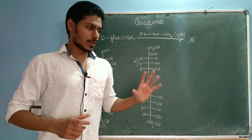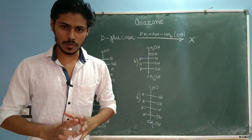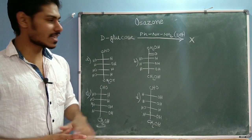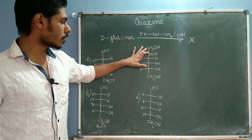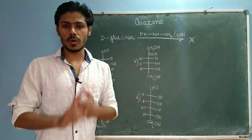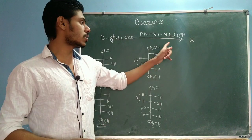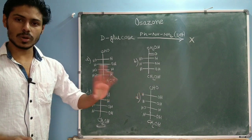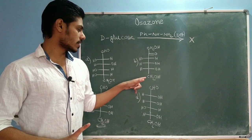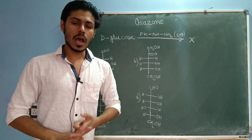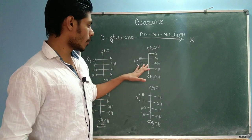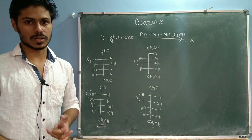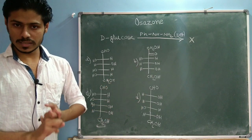To solve this question you don't need the full mechanism of osazone formation, but you should know the conditions under which osazone forms and what its structure looks like. To form an osazone, you need a carbonyl group at the C1 or C2 position. All aldo-hexoses with an aldehyde at C1 will undergo osazone formation, as will fructose, which has a keto group at C2. If the carbonyl is at C3 or elsewhere, osazone will not form.